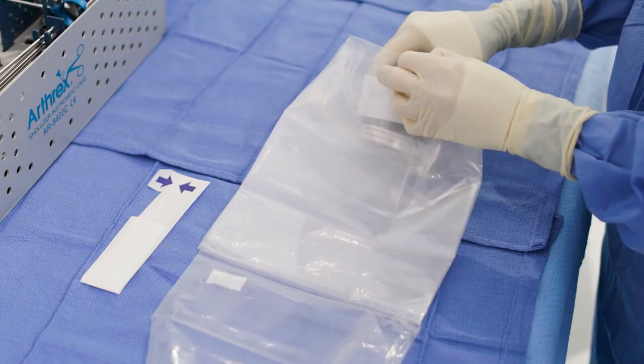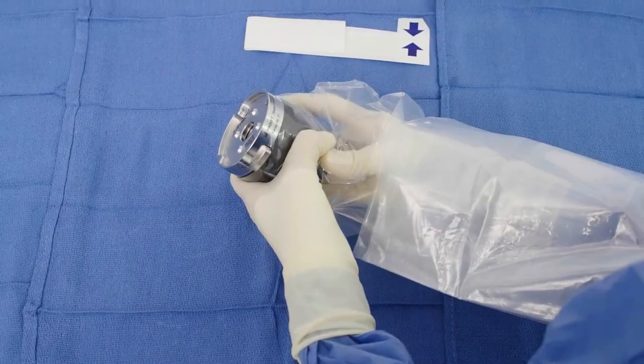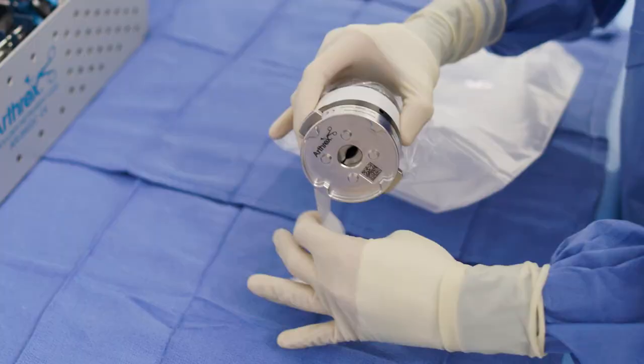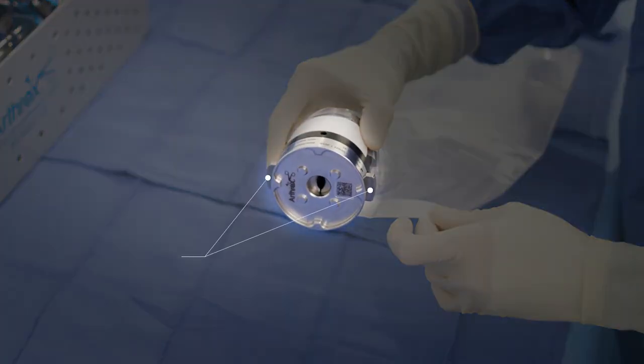Insert the adapter into the sterile drape. Tape the beginning of the sterile drape to the center area of the adapter using the adhesive tape. Do not cover the release buttons by the adhesive tape.